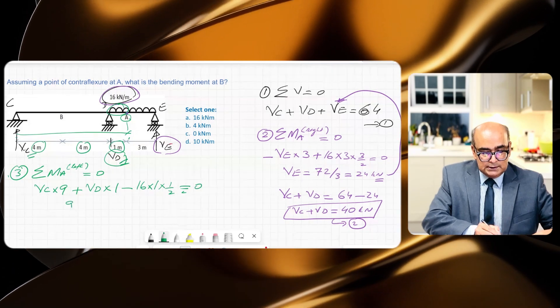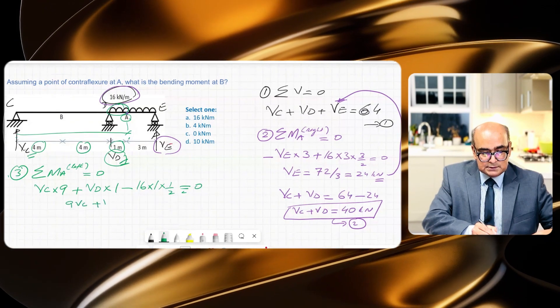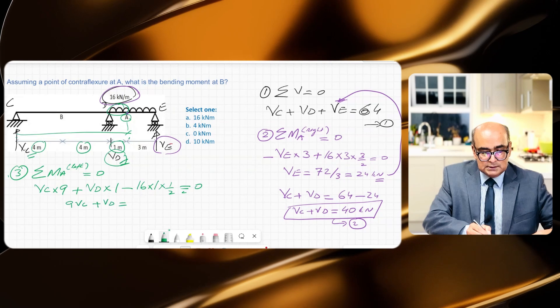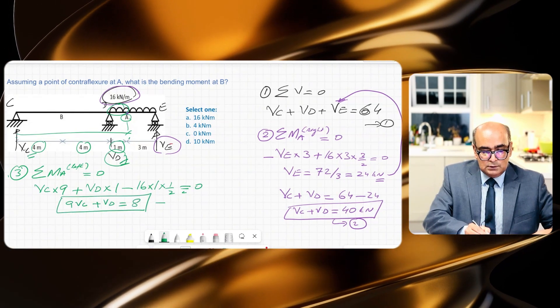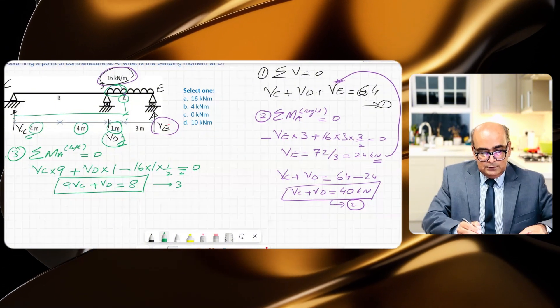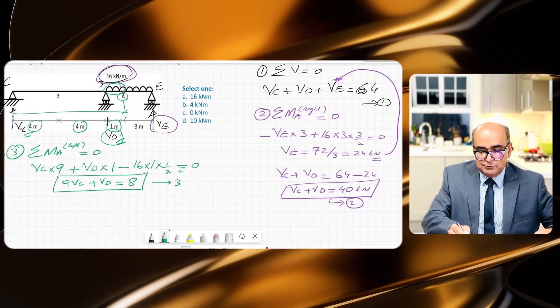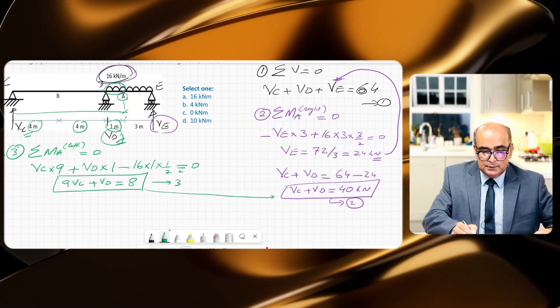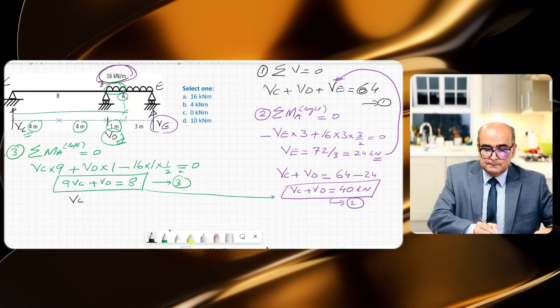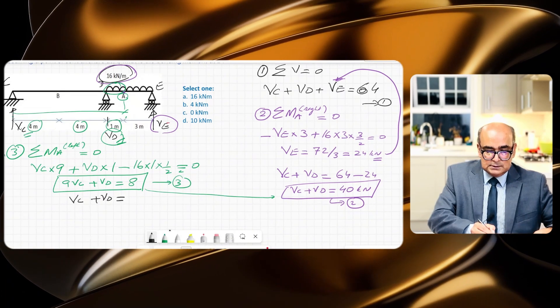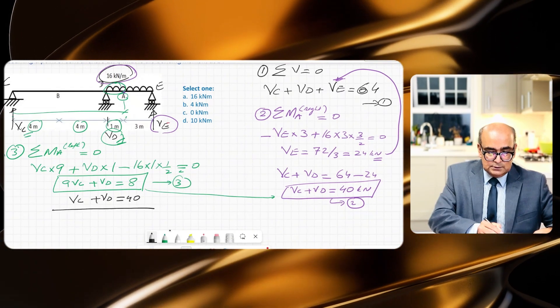So I can say that 9VC + VD is equal to 8, and I call this equation as equation 3. Now if you want to simplify it, I can say that subtracting equation 2 from equation 1, so if I write this equation here: VC + VD is equal to 40.